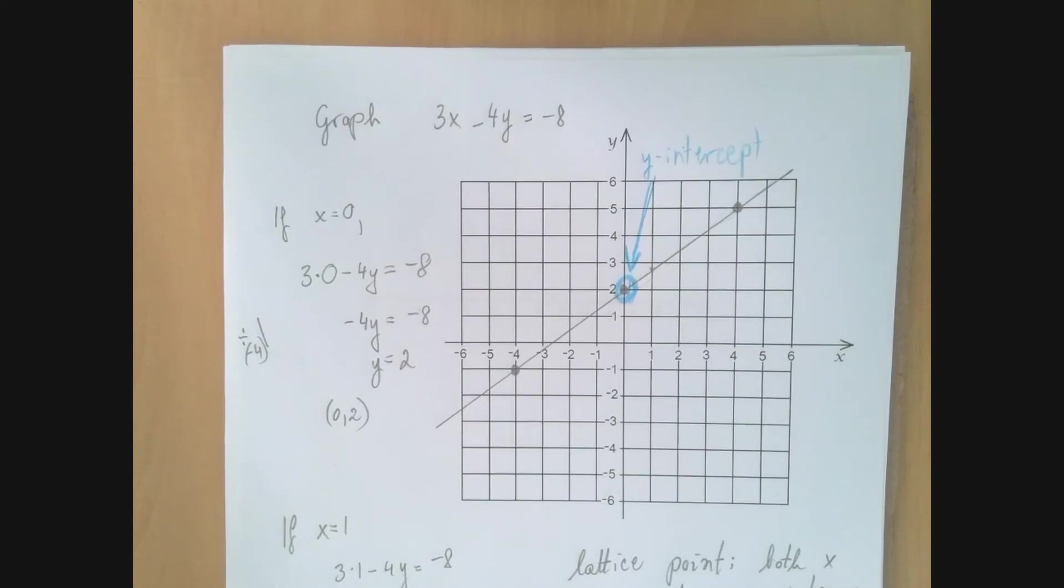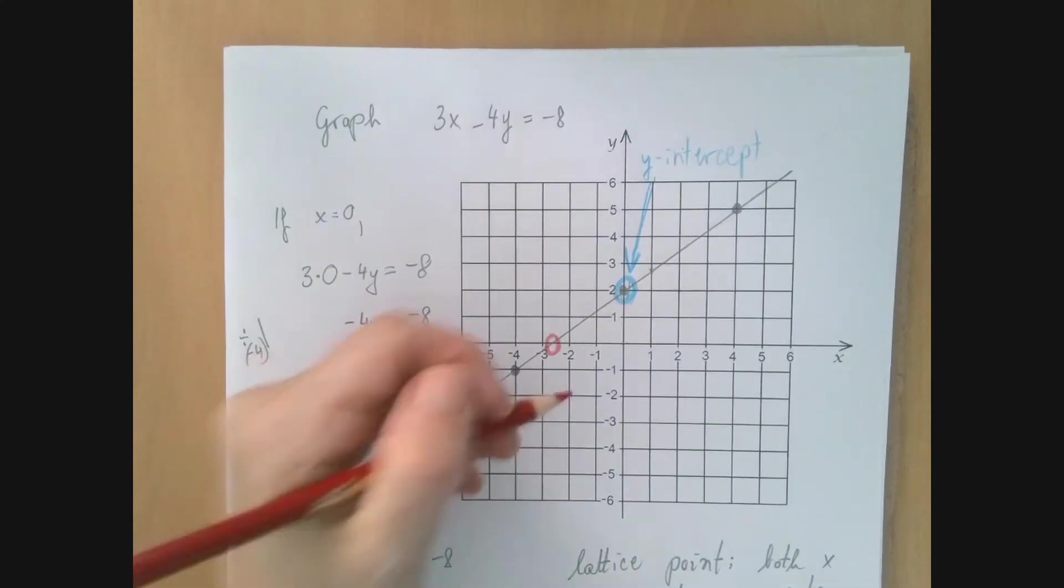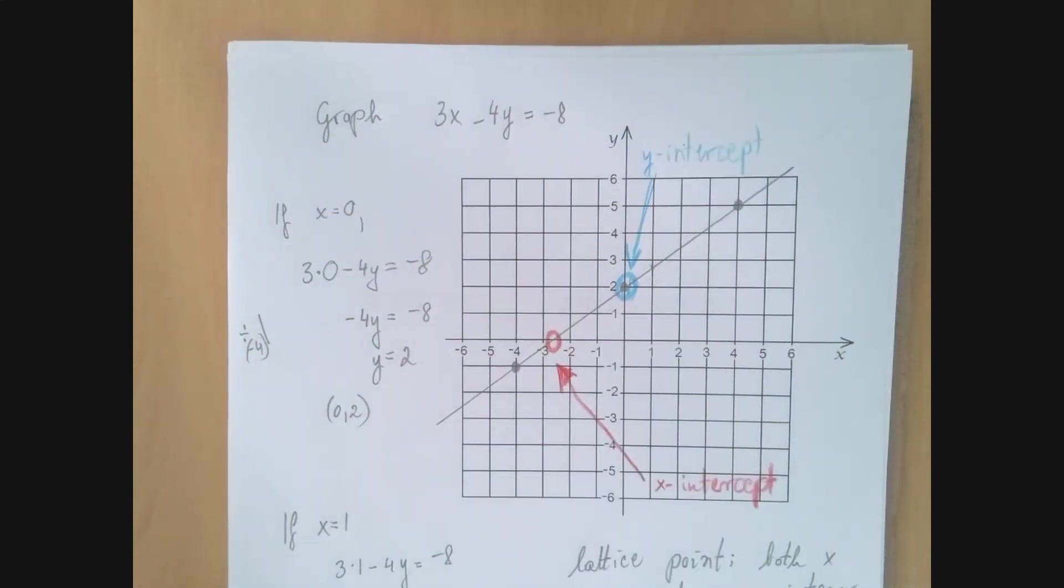And similarly, this is called the x-intercept. Now, the x-intercept is not a lattice point, right? It looks like the y-coordinate is 0, but the x-coordinate is somewhere between negative 2 and negative 3. If we want to find it exactly, we would need to look for the x that will make y 0.